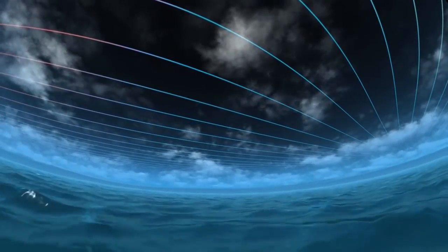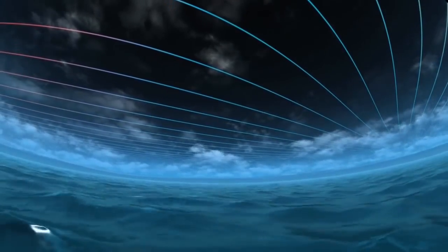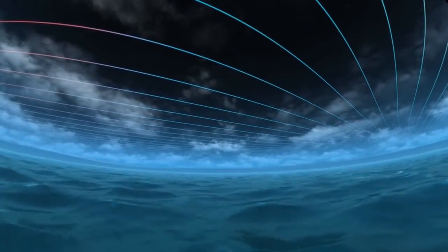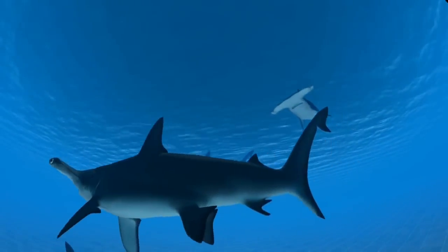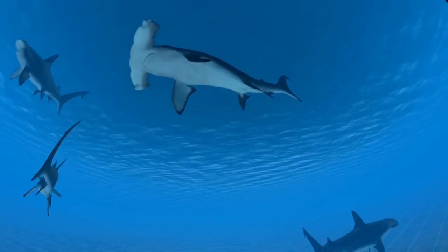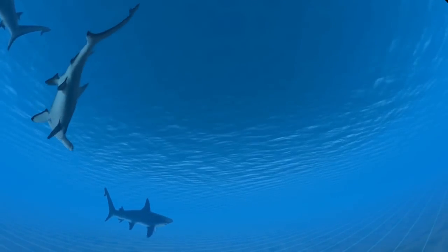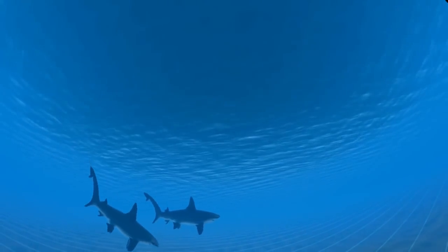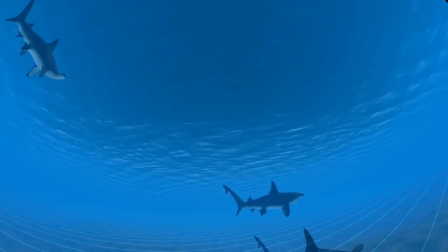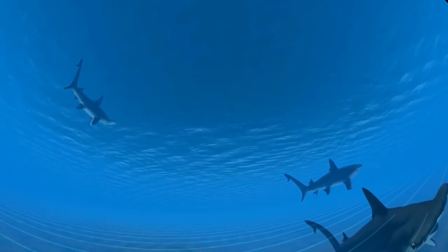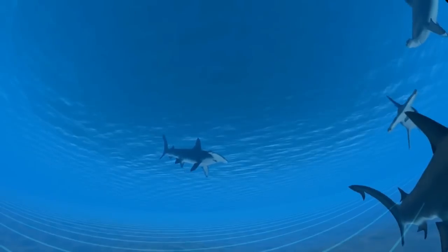Many different animals can sense Earth's magnetic field through structures in their eyes or brains. If fish swim along the direction of Earth's magnetic field lines, they sense nothing. But if they swim across the magnetic field, they can detect a tiny electrical force. This force guides them as they migrate north and south during the year.